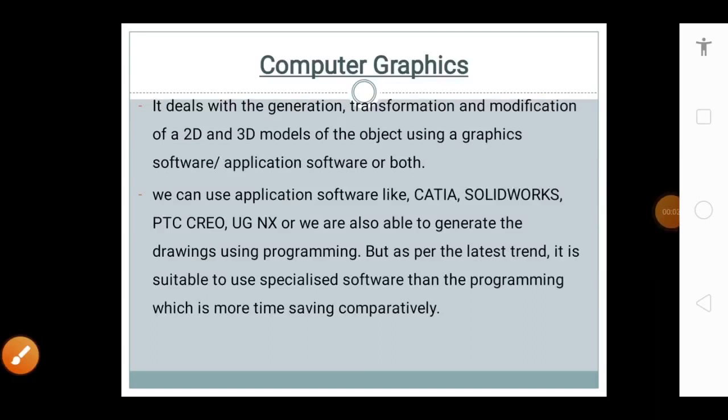Computer Graphics deals with the generation, transformation, and modification of two-dimensional and three-dimensional models of objects using graphics software, application software, or both. We can use application software like CATIA, SolidWorks, PTC Creo, UG NX, or we can also generate drawings using programming like AutoLISP. However, as per the latest trend, it is more suitable to use specialized software rather than programming, which is more time-saving comparatively.